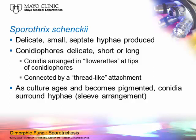Sporothrix schenckii produces the small, delicate septate hyphae characteristic of all dimorphic fungi — in fact, it may have even smaller septate hyphae. If you look at the culture under the microscope, you'll see conidiophores on a long stalk; they're very delicate and may be short. At the tip, you find spores connected to the tip of the long conidiophore by a thread-like attachment — that's where it gets its name. As the culture gets dark and pigmented, the conidia begin to grow all the way around the hyphae strand, just like a sleeve on your shirt, which is called the sleeve arrangement, and the conidia turn dark because of melanin.